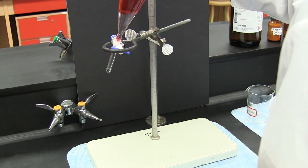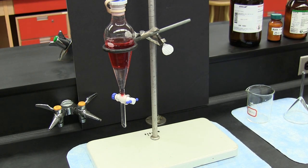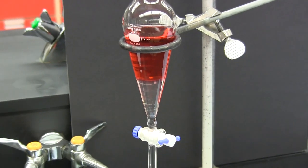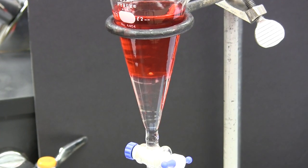Then, with the stopcock closed, the sep funnel is returned to the ring support and the two layers are allowed to separate. Here we can see the denser dichloromethane layer on the bottom and the water layer is on the top.